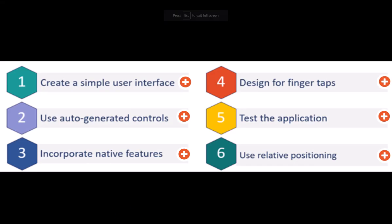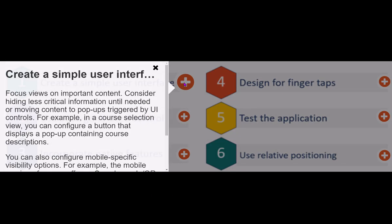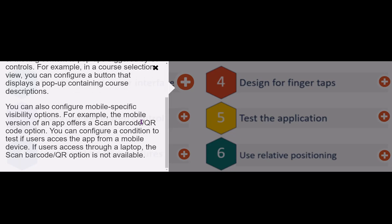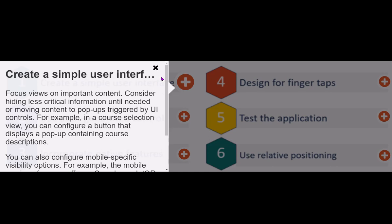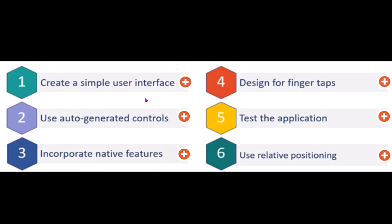These are the six device characteristics and best practices you need to follow while designing a mobile application. Create a simple user interface using out-of-the-box generated controls rather than non-autogenerated controls. For example, a user should click on a button because in a mobile app, clicking a button is more intuitive than clicking a link.